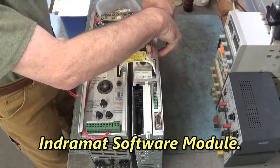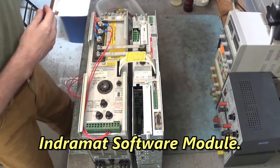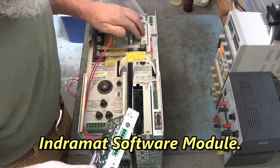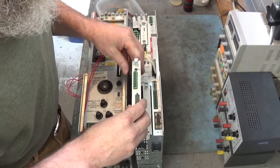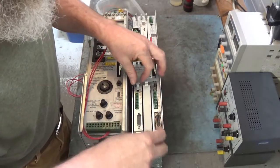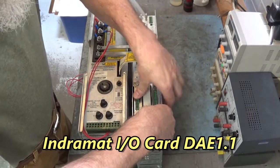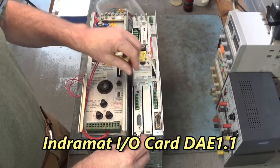Now we're installing the personality module that holds the parameters. Program module. Here's the I.O. card, DAE 1.1.